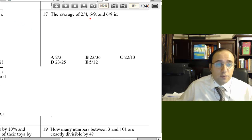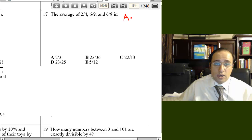Okay, number 17, the average of 2 over 4, 6 over 9, and 6 over 8. As I said, the average is the sum of the numbers divided by the number of numbers, which is 3.